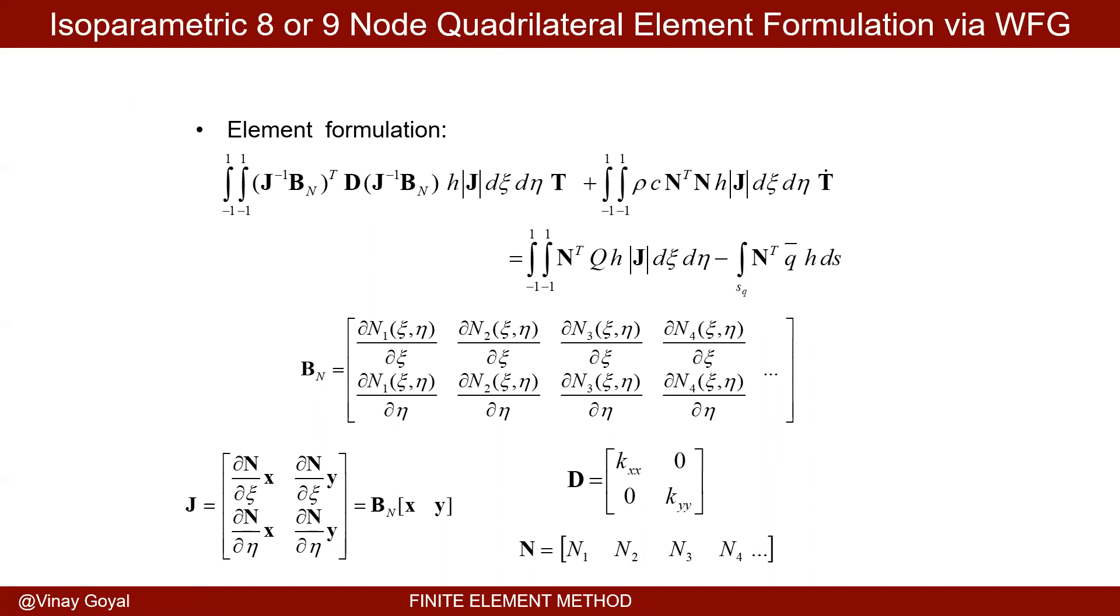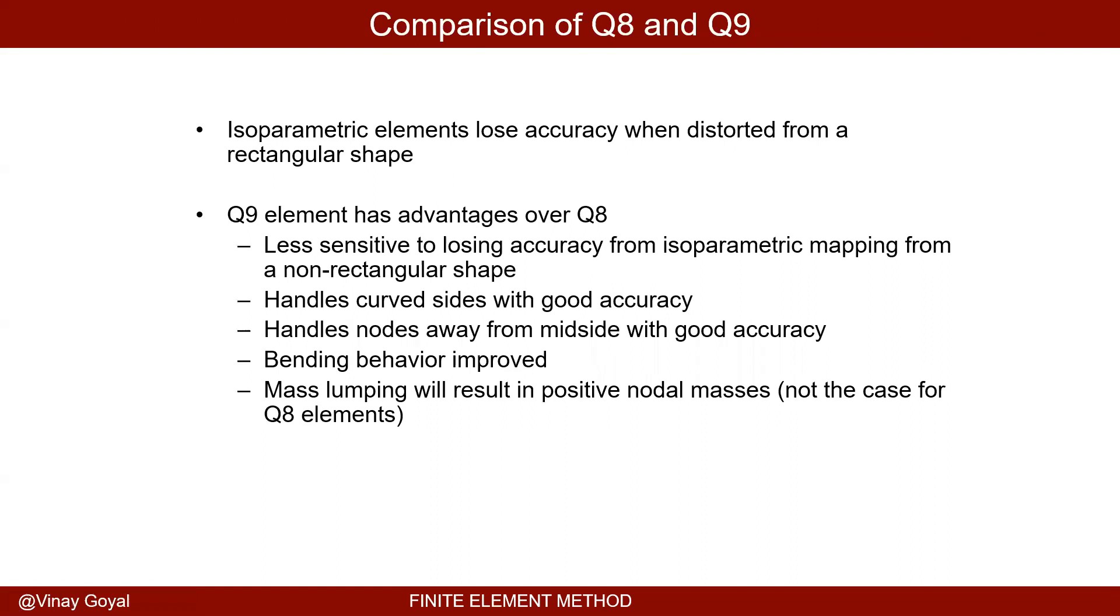Very similar idea but now I have nine shape functions. So this, there's nine of this all the way to the right. Now the integrals go from minus one to one because it's a square, not a triangle. And I have to calculate J bold, which is the determinant. There's a two by two. Very similar procedure. Nothing more to do. The shape function is the only thing that changes.